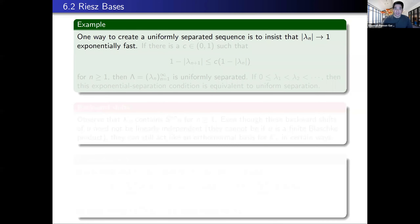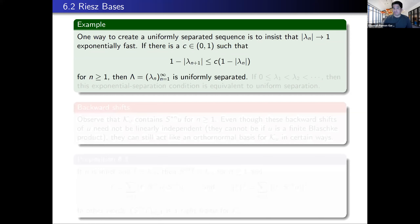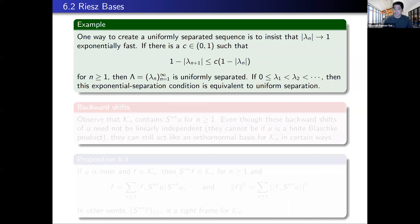One way to create a uniformly separated sequence is to insist that the zeros tend to the boundary really fast. If there's a constant C strictly less than one such that you have exponentially fast convergence to the boundary, then you automatically get a uniformly separated sequence. In fact, if your zeros are real and tending to one along the real axis, then this exponential separation condition is actually equivalent to uniform separation.